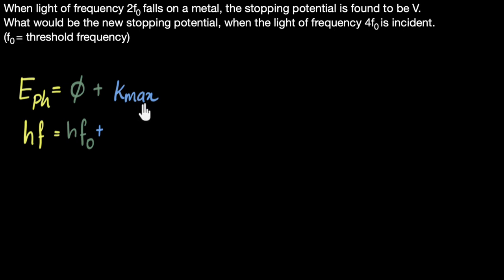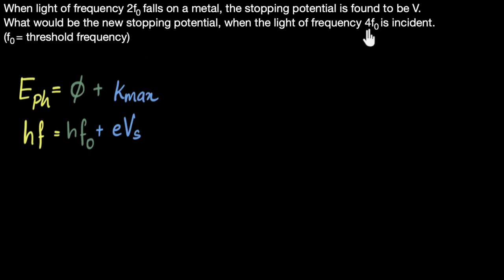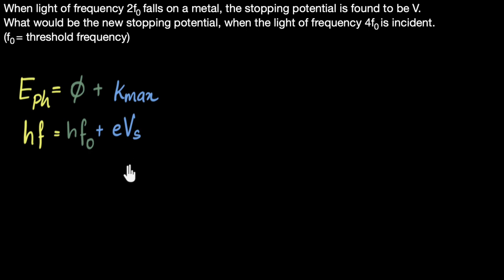Kinetic energy equals the stopping voltage in electron volts, so to convert to joules it'll be E times the stopping voltage. We are given F in two cases: one is 2F₀, where the stopping voltage is V. The question is when F is 4F₀, what is the stopping voltage? We can build two equations, compare them, and find the new stopping voltage.